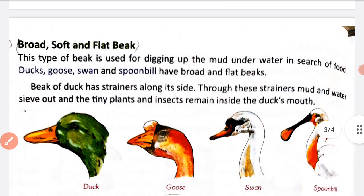The last type of beak is the broad, soft and flat beak. This type of beak is used for digging up mud under water in search of food. Birds use this beak type to dig in mud underwater - means khodna - apne food ko dhundhna. To is type ki beak ka use karte hai.